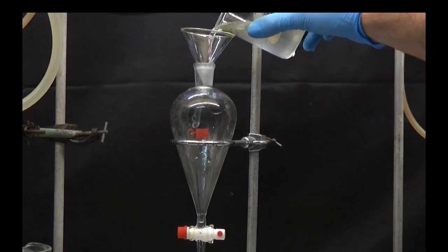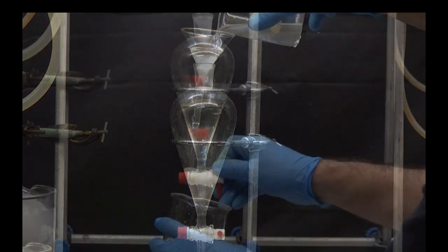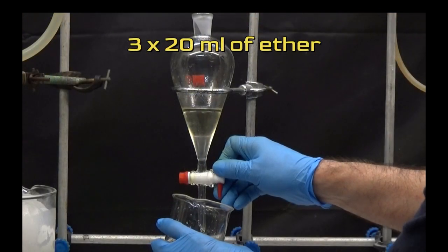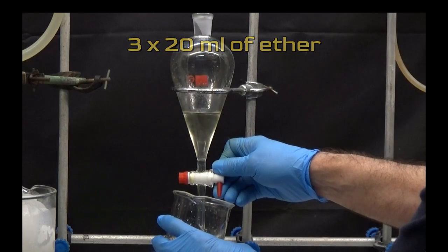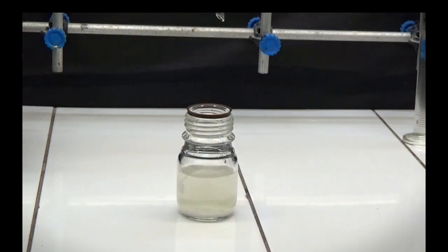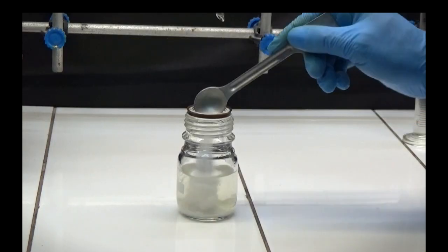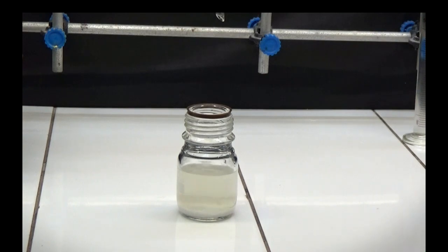Remove the organic layer and wash the aqueous layer three times with 20 milliliters of ether. Dry with anhydrous magnesium sulfate and leave in place for 12 hours.